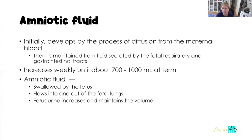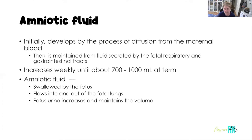Let's talk about amniotic fluid. Amniotic fluid serves really important purposes for the growing fetus. Initially, it develops through the process of diffusion from maternal blood. It's important to understand that there is no overt mixing of blood between mom and baby — the nutrients and oxygen from mom's circulatory system pass through the placenta to baby's circulatory system through diffusion and osmosis. The volume is maintained as the baby swallows amniotic fluid, it flows through the GI tract, and they urinate it back out into the amniotic fluid.